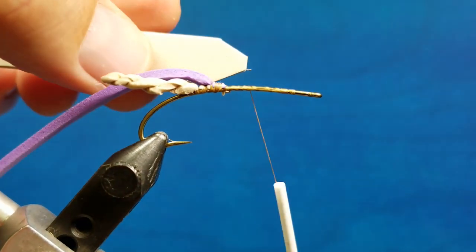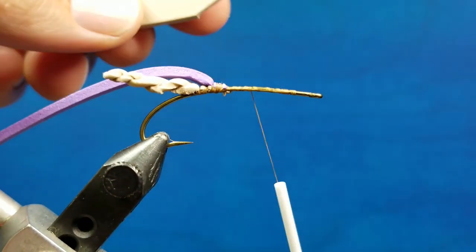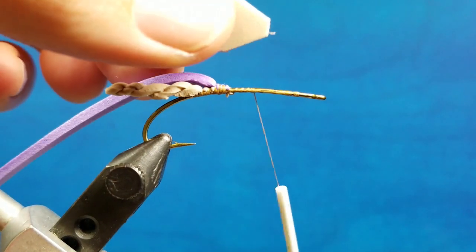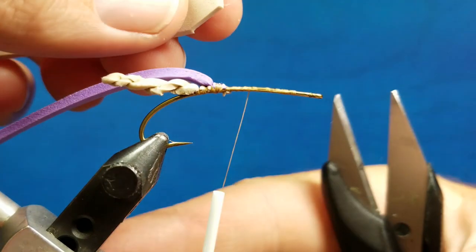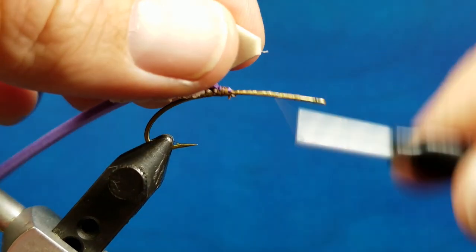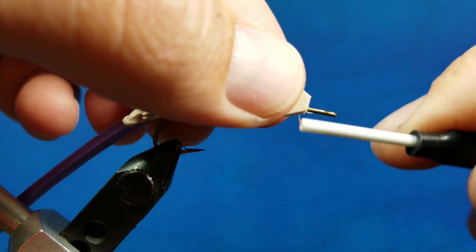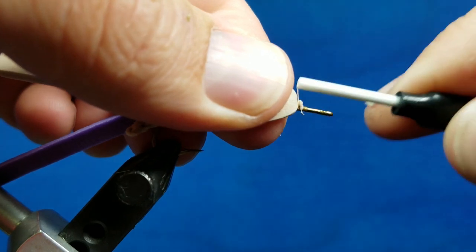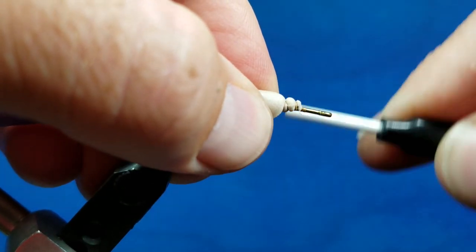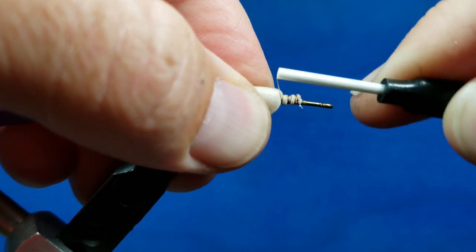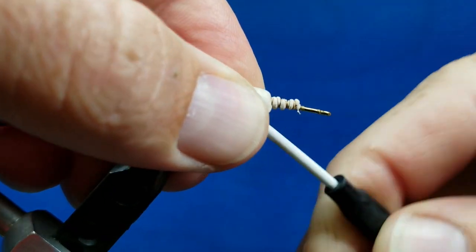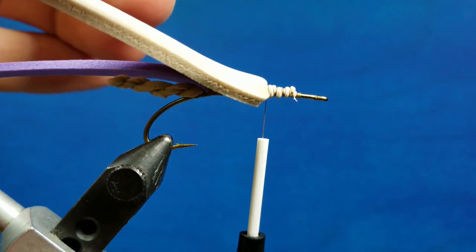I've got a pretty wide chunk of 3mm tying foam here and I always like to cut this to a little bit of a taper when I tie it in. It just makes it easier to get a purchase on it when you start the thread wraps. So we'll attach this here and then I'll show you a couple of different things. You can see how with that taper, I can work my thread right up onto the front of the piece of foam and attach it pretty easily.